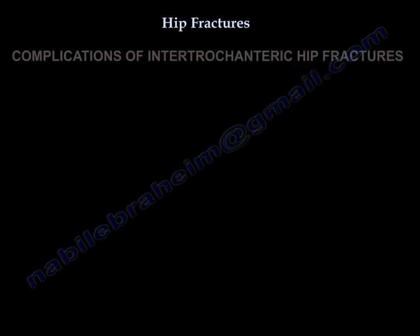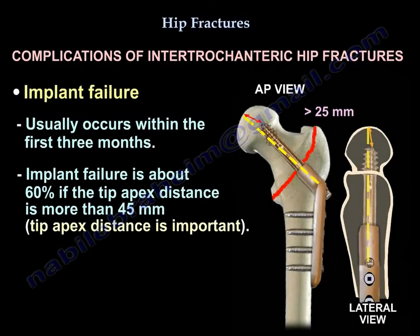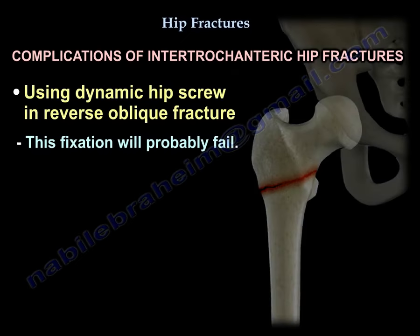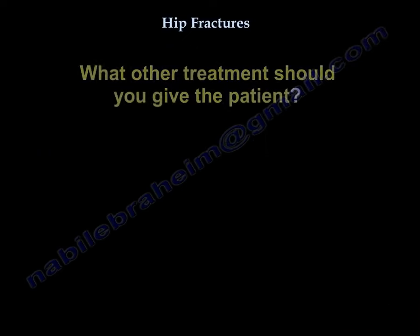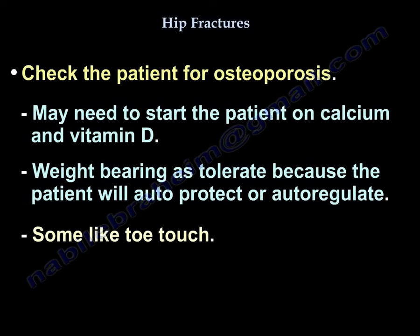The most important complication of intertrochanteric hip fracture is implant failure, which usually occurs within the first three months. Failure rate is about 60% if the tip-apex distance is more than 45 mm. Using a dynamic compression hip screw in a reverse oblique fracture will also likely fail. Additionally, check the patient for osteoporosis and consider starting calcium and vitamin D. Weight-bearing as tolerated is recommended since the patient auto-regulates, though some advocate toe-touch weight-bearing.